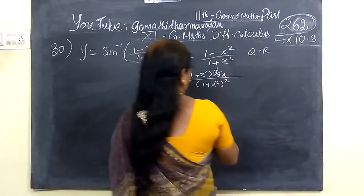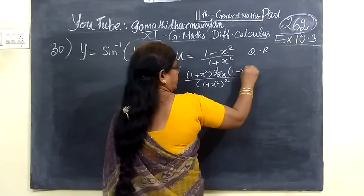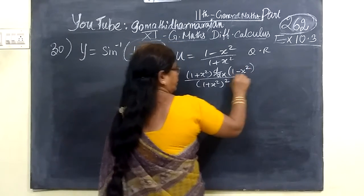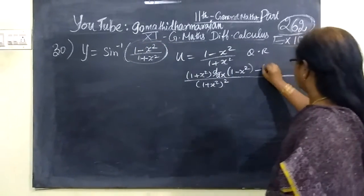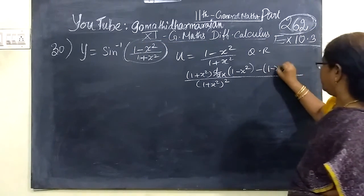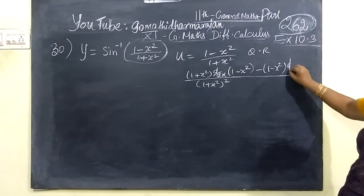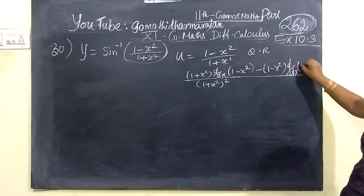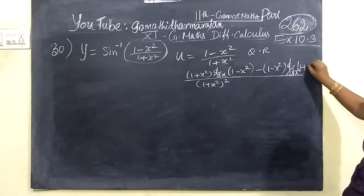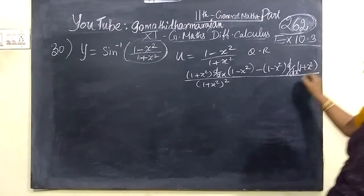We differentiate: d by dx of 1 minus x squared, then minus — you write 1 minus x squared as it is — then d by dx of 1 plus x squared.